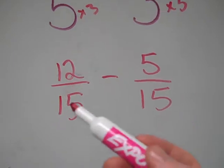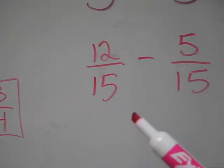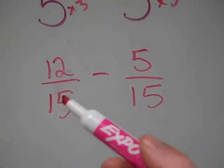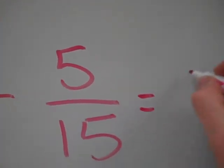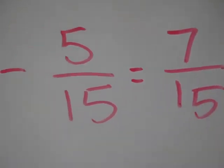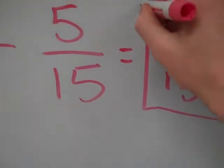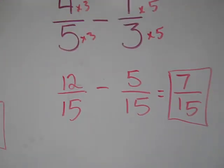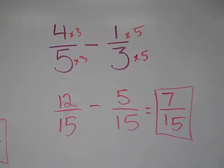And then just simply subtract. Now you can see, just like my last example, my denominators are like, so I can just subtract the top. So 12 minus 5 is 7. Keep my denominator of 15ths. And this is already in simplest form. So I am done. 4 fifths minus 1 third is 7 fifteenths.